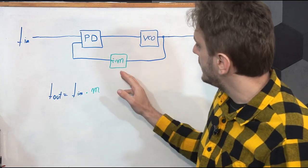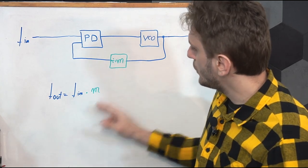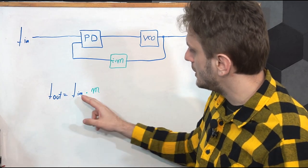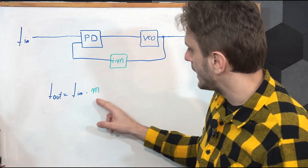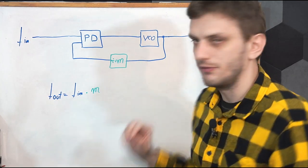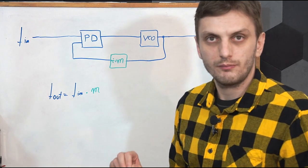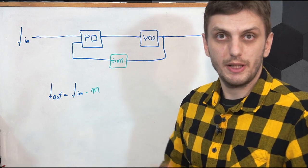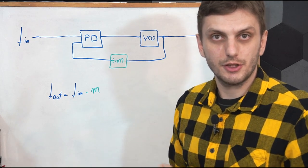By adding this counter in the feedback path, we can obtain an output frequency which is the input frequency times this division rate — effectively multiplying the input frequency by an integer number.